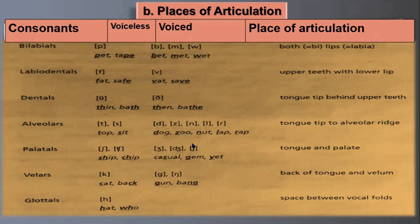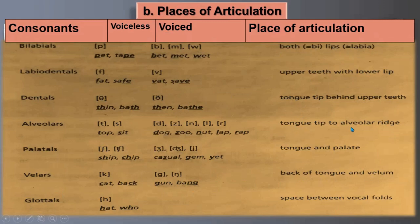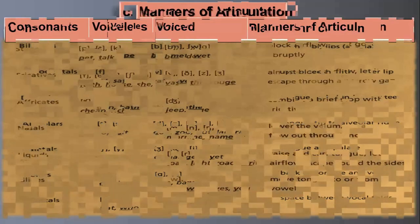Here is a summary chart of the places of articulation: bilabial — both lips join together; labiodental — upper teeth with lower lip; dental — tongue tip behind upper teeth; alveolar — tongue tip to alveolar ridge; palatal — tongue and palate; velar — back of tongue and velum; glottal — space between vocal folds. This concludes the places of articulation.